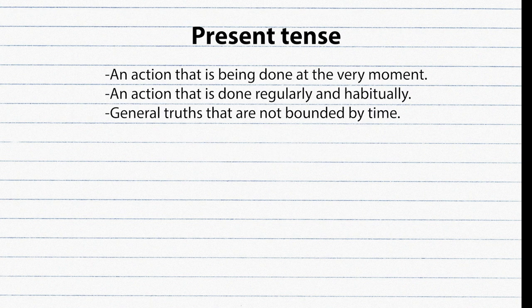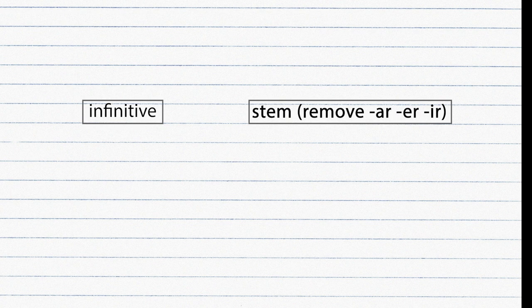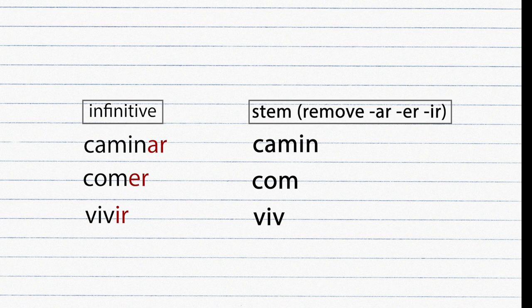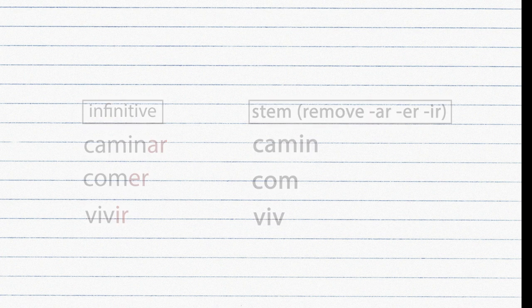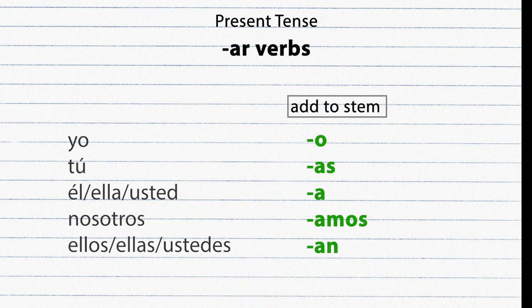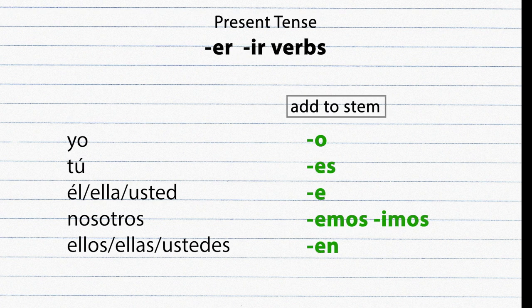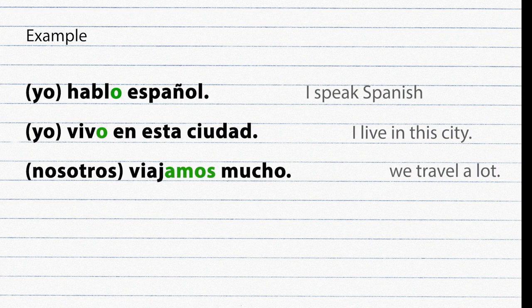Present tense is used to talk about an action happening at the very moment, an action that is regularly and habitually done, and general truths not bounded by time. To conjugate verbs in the present tense, first remove the AR, ER, or IR ending to get the verb stem, then add the appropriate endings. Examples: Hablo español, Vivo en esta ciudad, Viajamos mucho.